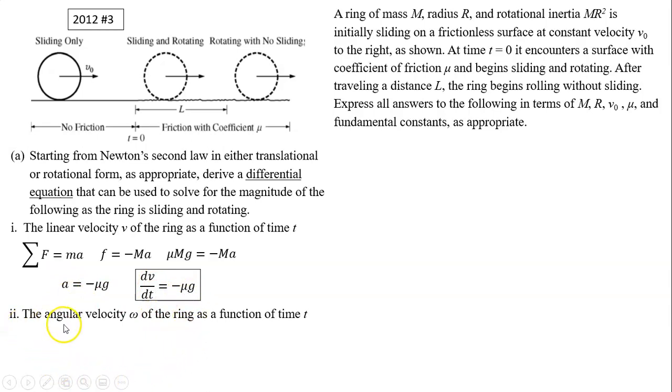Part 2: You do the same thing for angular velocity ω of the ring as a function of time. Very similar. Instead of force equals ma, you have net torque equals Iα. What is the force that's producing torque? It is the friction. So torque equals f times r, that equals I, which is mr² times α. Now r and r cancel, we also know friction equals μmg.